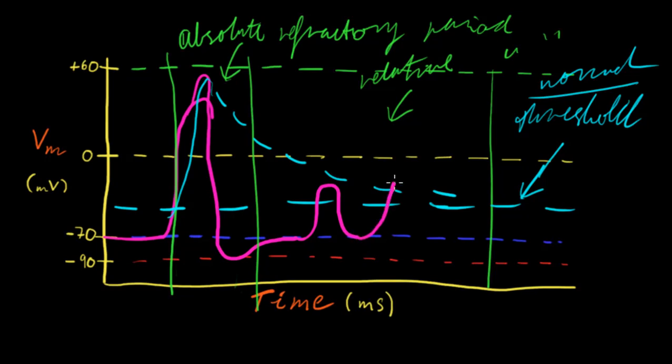But if we go over that, then of course we get an action potential as normal. But of course, by doing that, we've created again another instance of an absolute and relative refractory period.